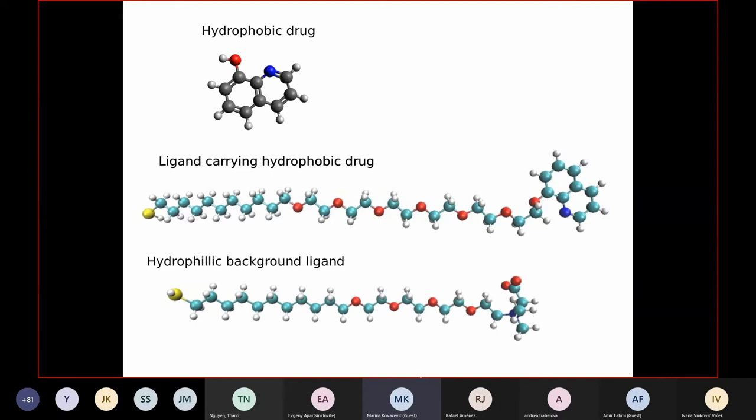Then we need to think how can we incorporate this drug into our system. And there are multiple ways of doing so. In this example, we chose to covalently bind these drugs to this ligand. However, we can also try to encapsulate the drug.